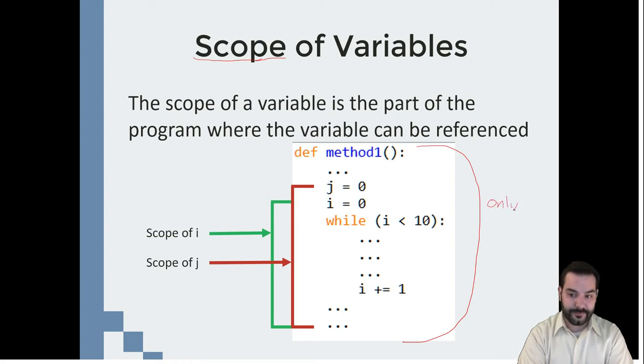j only exists in, in our case, method one. That's the only place it's going to exist.